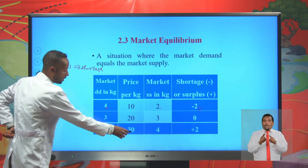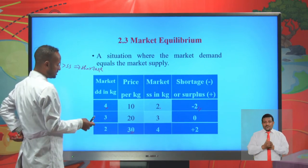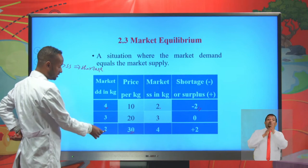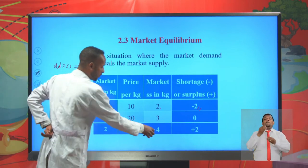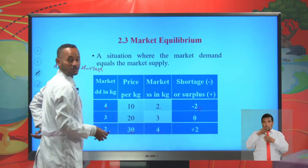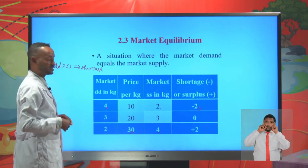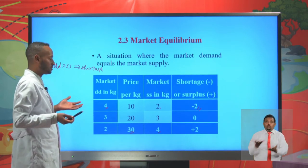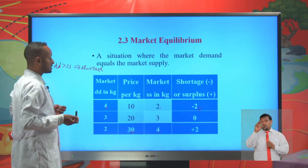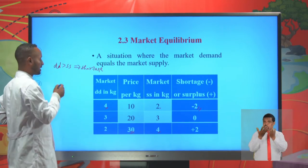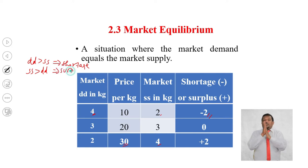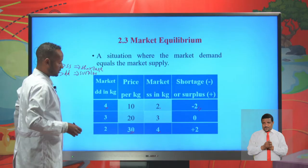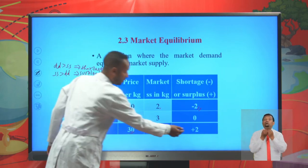When the price of a kilogram of orange is 30, the quantity demanded in the market is 2 kilograms because the price is expensive. But the market supply for orange is 4 kilograms, because producers are highly motivated with the rise in price and will offer more. In this case, there is an excess of market supply over market demand, which is called surplus. So there is a surplus of 2 kilograms of orange.